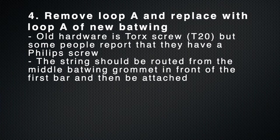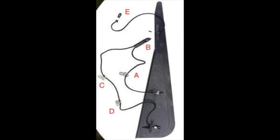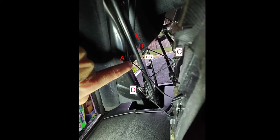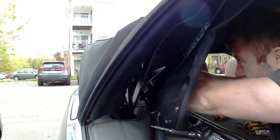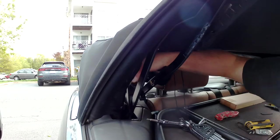The next step is to remove the old hardware loop A and replace it with loop A of the new batwing. My old hardware was a T20 screw. Some people have stated that they have a Phillips head screw, but ultimately what you're trying to do is completely take off the old loop and put on the loop from your apparatus. This string will go directly from the middle of the batwing in front of everything and then ultimately be connected to point A.